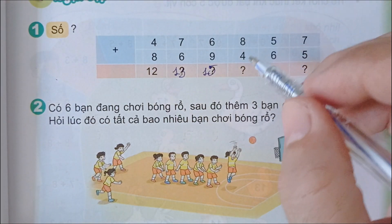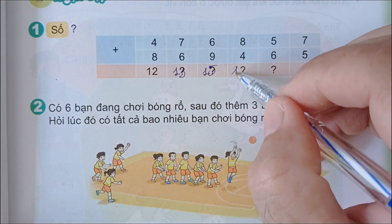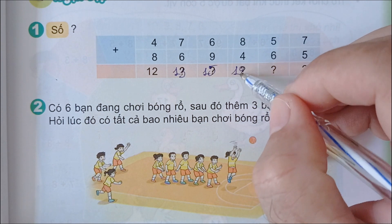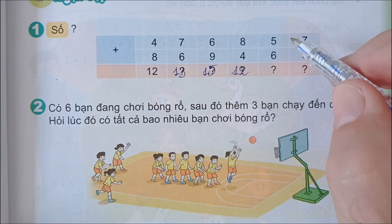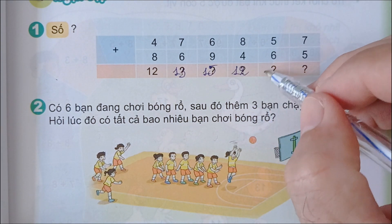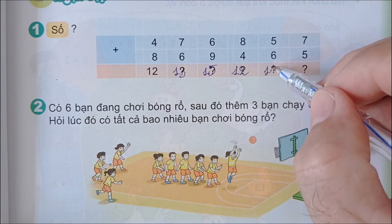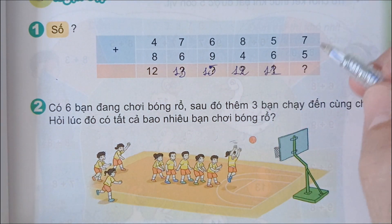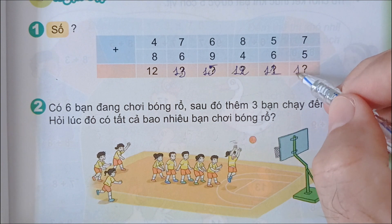7 và 15, 8 cộng 4 và 12, 5 cộng 6 và 11, 7 cộng 5 và 10.